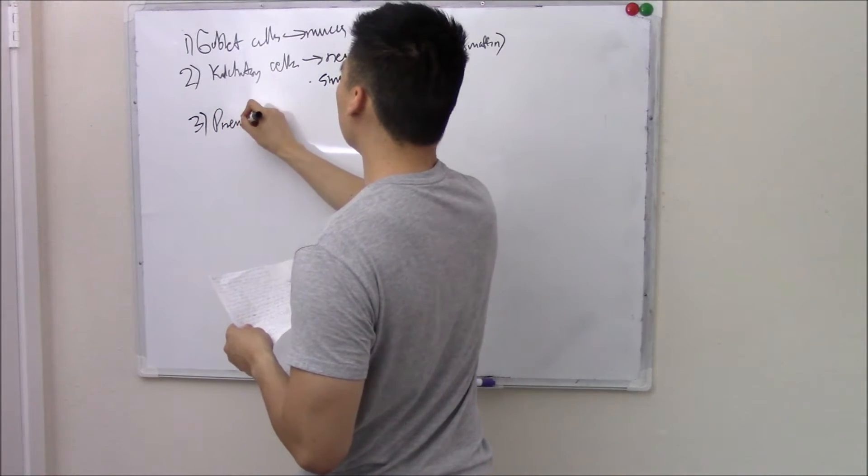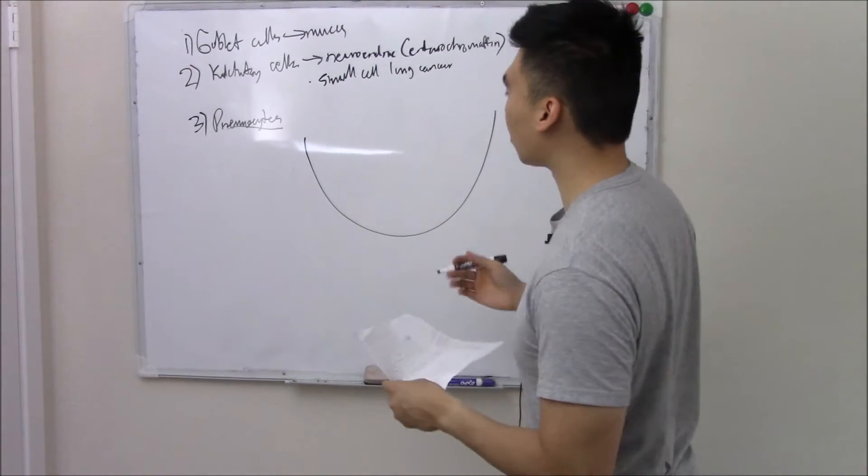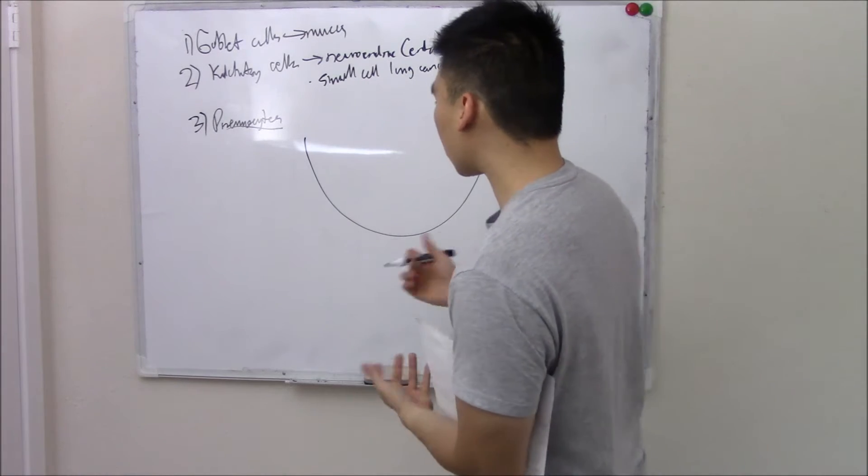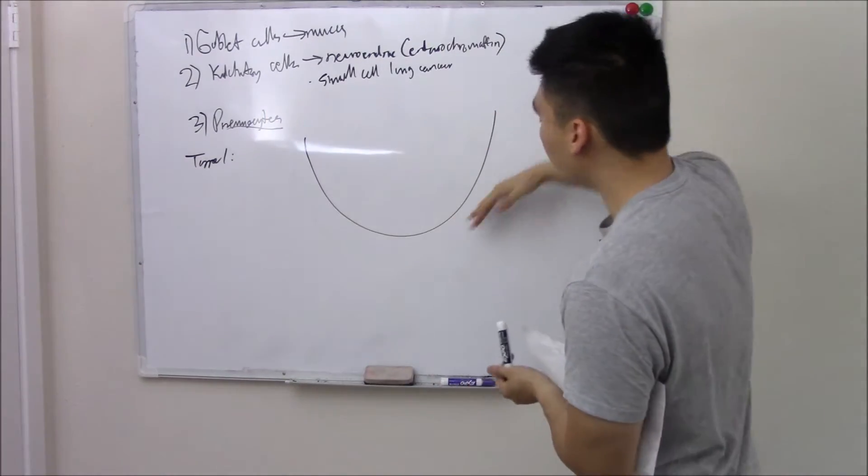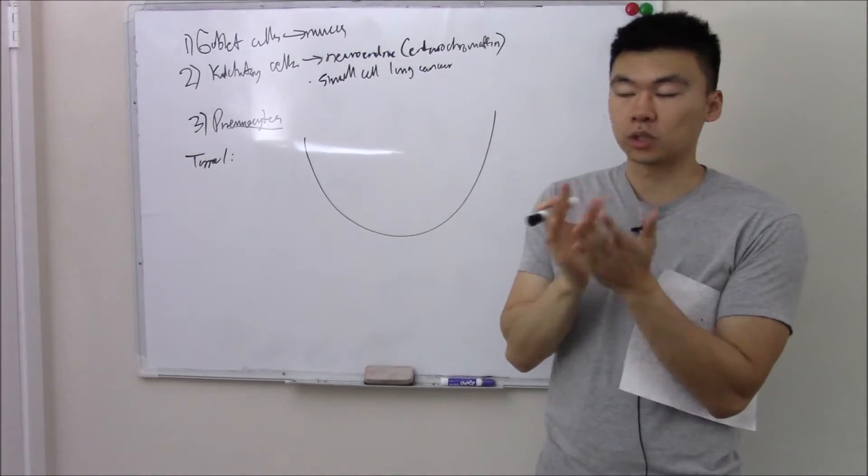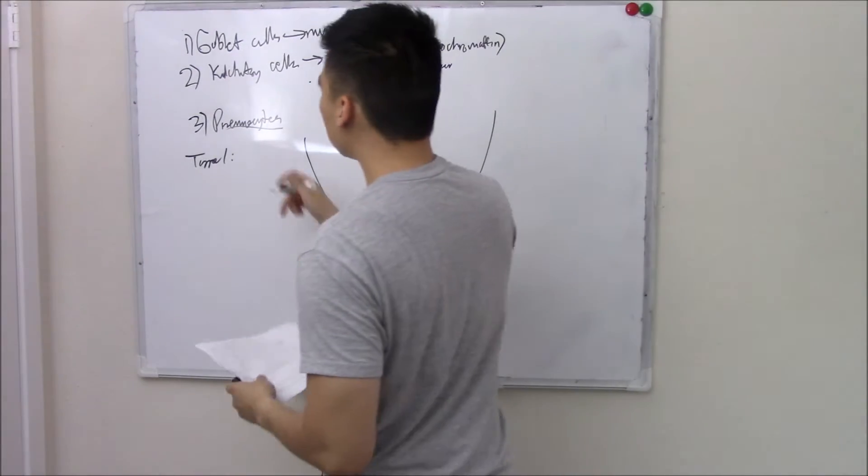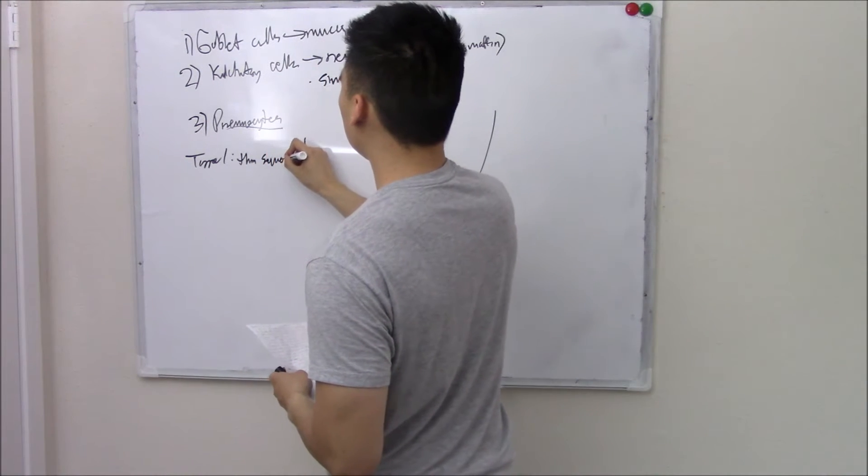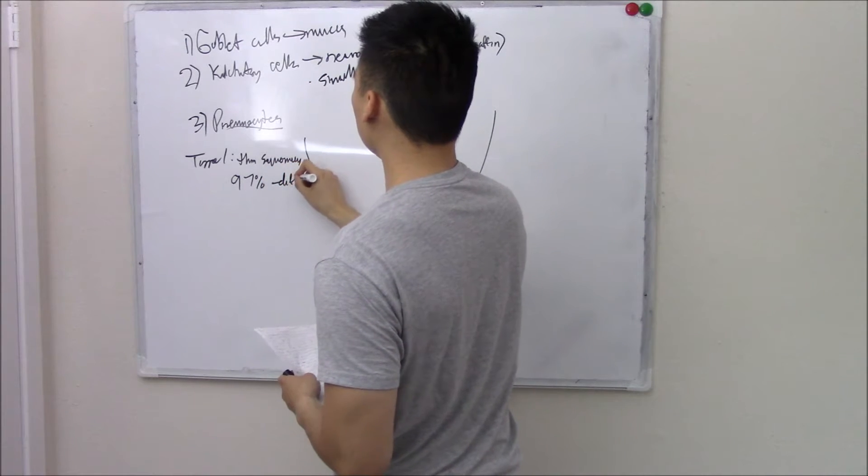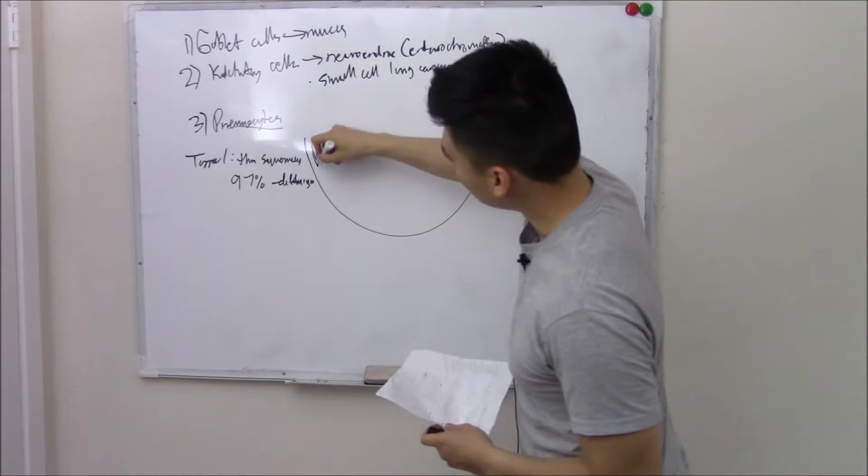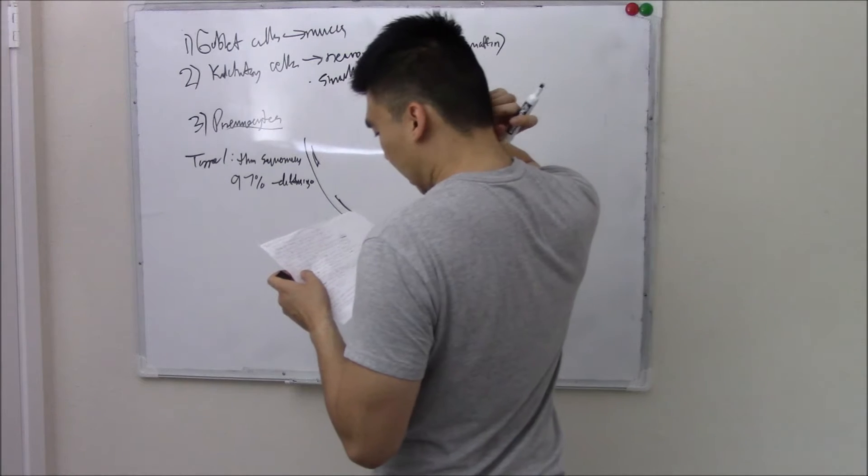Next up we have the all-important pneumocytes. What are pneumocytes? These are cells found in your alveoli. Let's draw out our alveoli. It's broken into type 1 and type 2. Type 1 cover most of your alveoli, and because they cover most of your alveoli, they're very thin. Your alveoli has to be thin because it exchanges gas. These are thin squamous, cover 97% of your alveoli, and are used for diffusion.